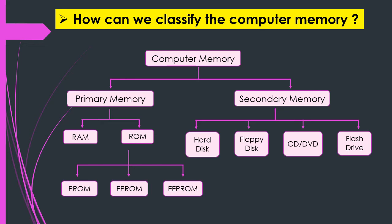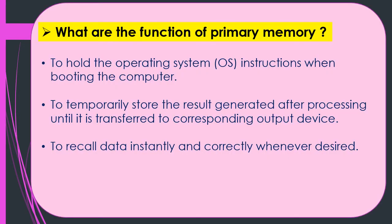The secondary memory can also be classified further. Types of secondary memory include hard disk, floppy disk, CD, DVD, and flash drive.